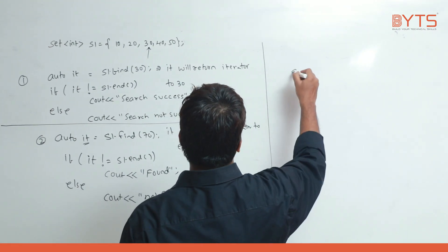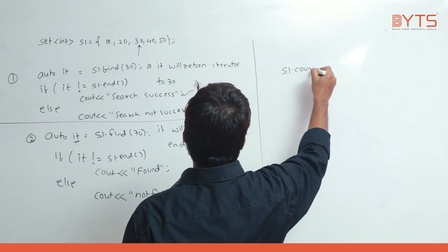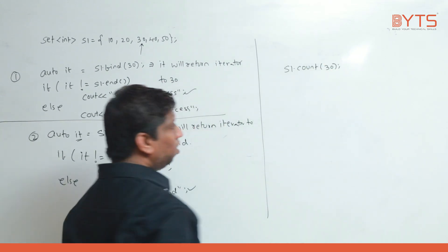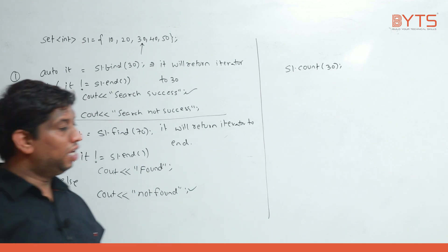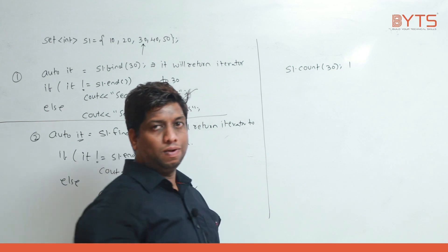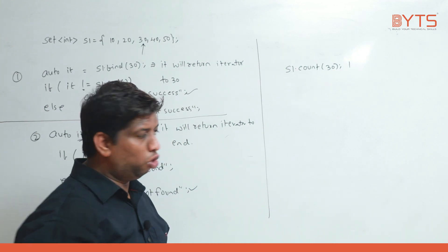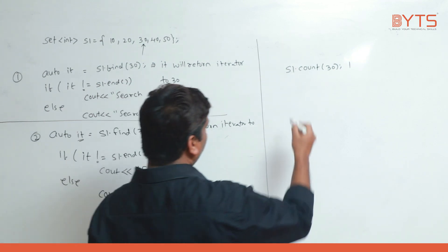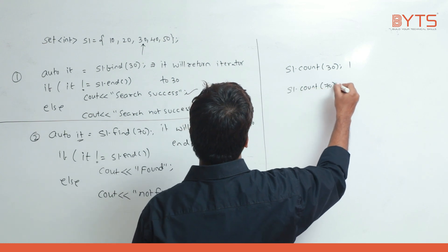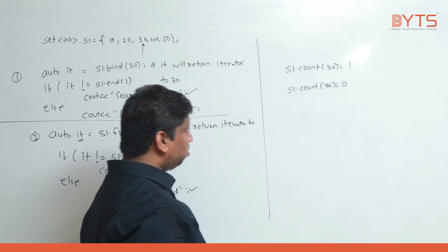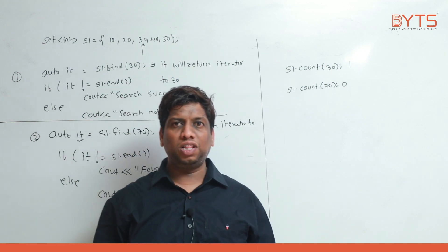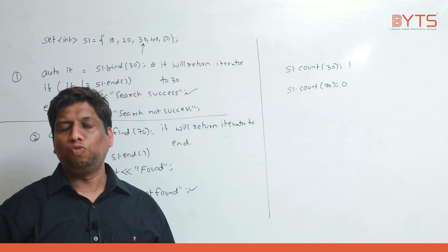s1.count(30) — if 30 is there, count returns 1, meaning true. s1.count(70) returns 0. Strictly speaking by terminology, count means how many 30s are there, but since every element in the set is present only once with no duplicates, count just returns 0 or 1.